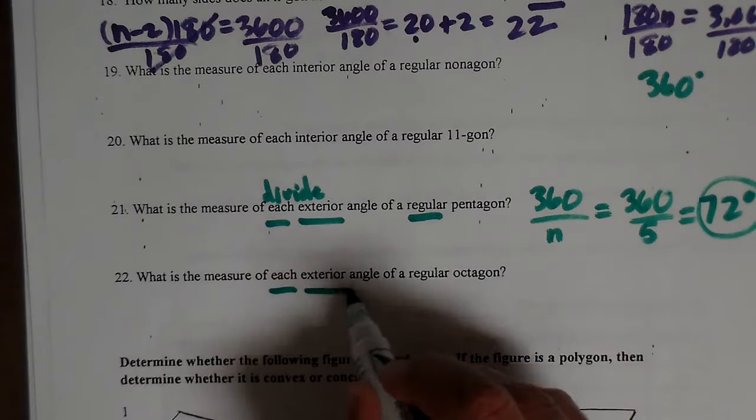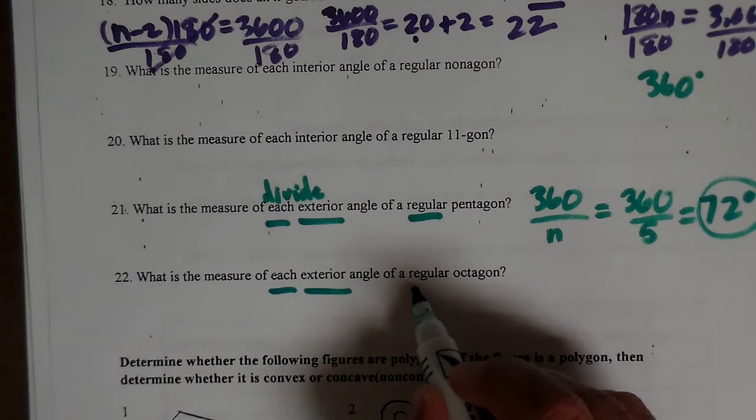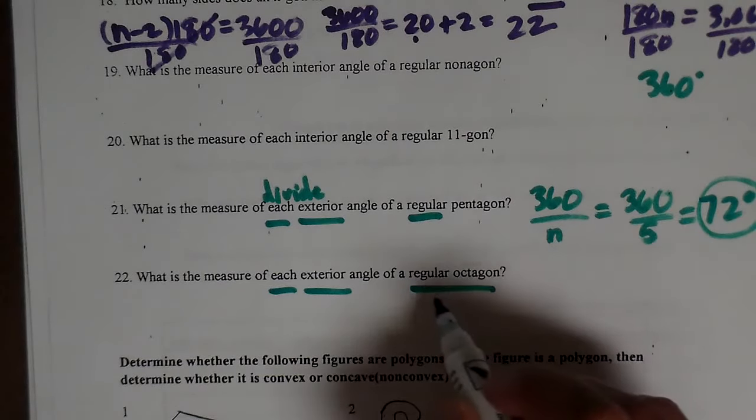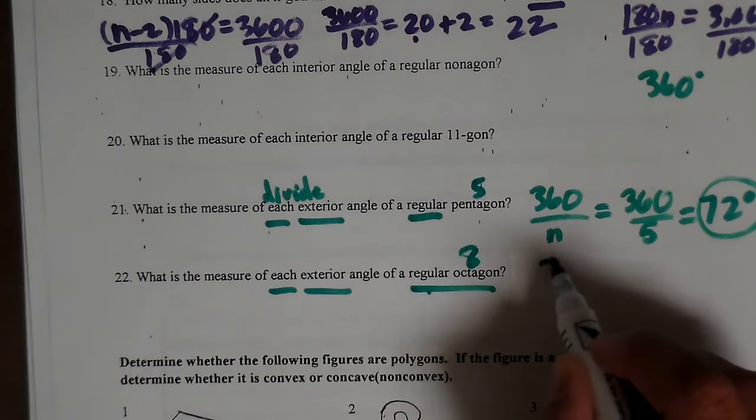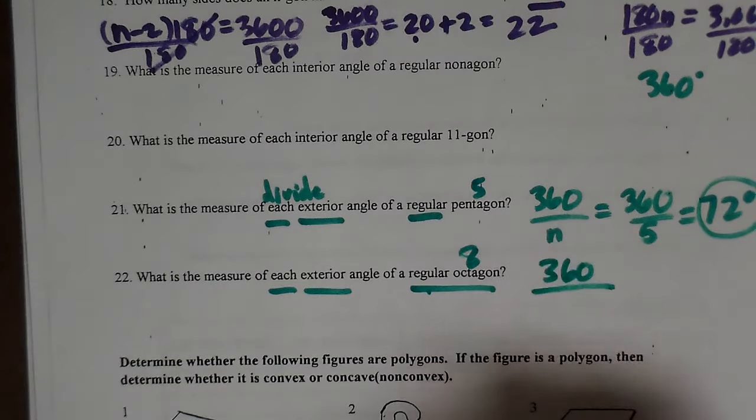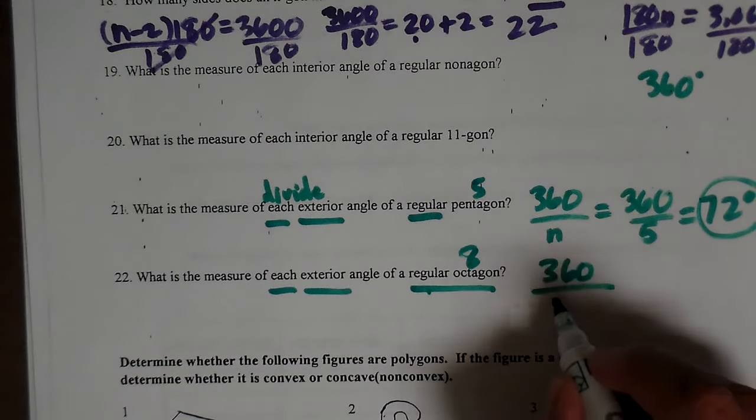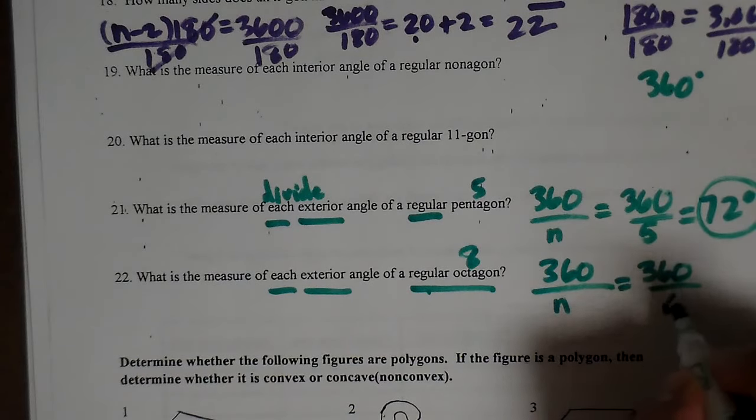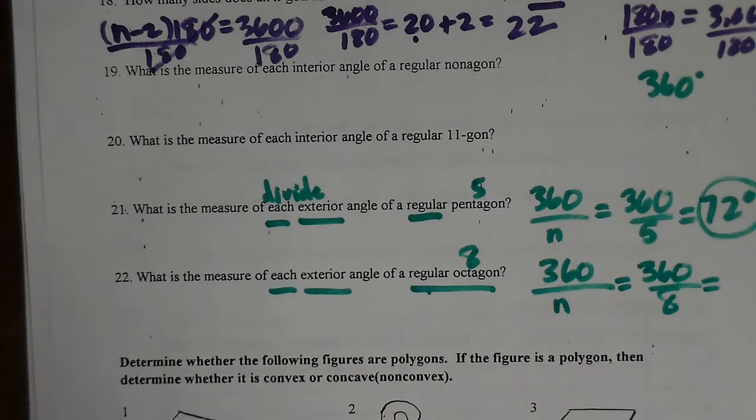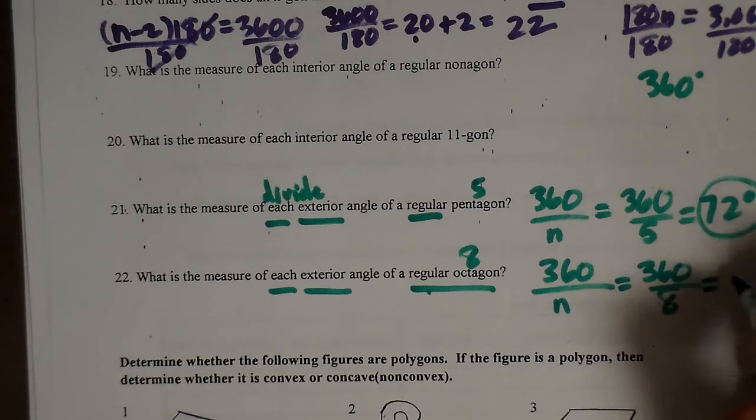Now let's look at each exterior angle of a regular octagon. Well, again, we're regular and now we've got octagon. Pentagon was 5, octagon's 8. What do the exterior angles always add up to? 360. So I've got 360 divided by the number of angles or sides, which in this case is going to be 8. So you're going to do 360 divided by 8 and you're going to get 45 degrees.